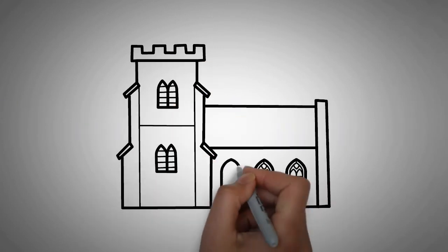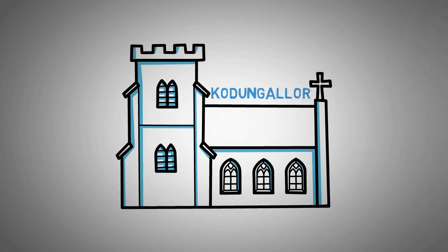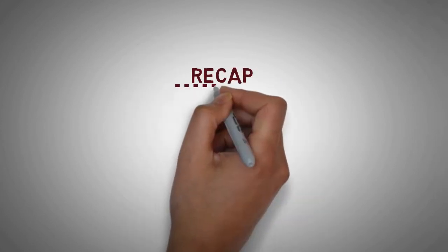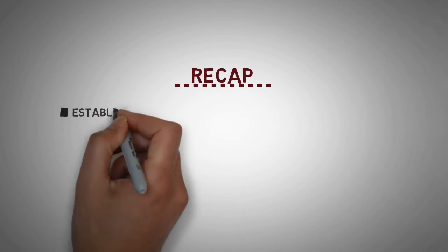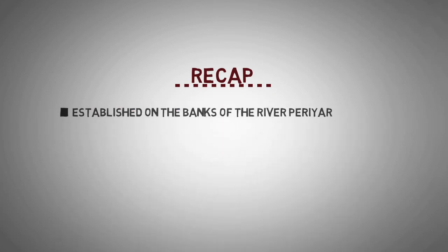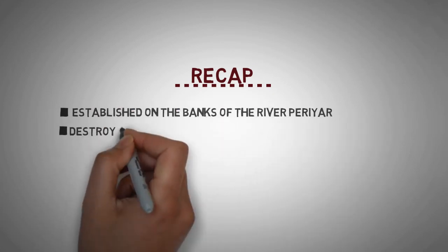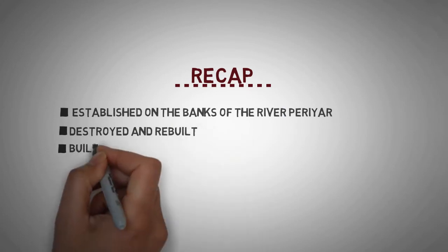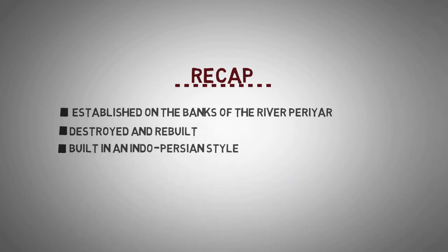In our last video, we looked at St. Thomas' church at Court of the Lord. Let's have a small recap. The church was planted at the banks of the River Periyar and was one of the first churches planted by St. Thomas. The church was destroyed but rebuilt again in an Indo-Persian style of architecture.